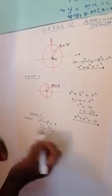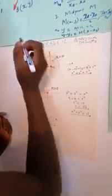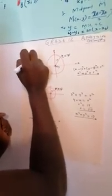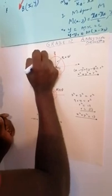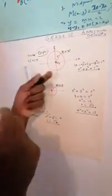We want r, not r squared. We want the square root of 6, not 6. Remember what we're doing here: we're calculating the equation of a circle whose center is at the origin, so the center is (0, 0).